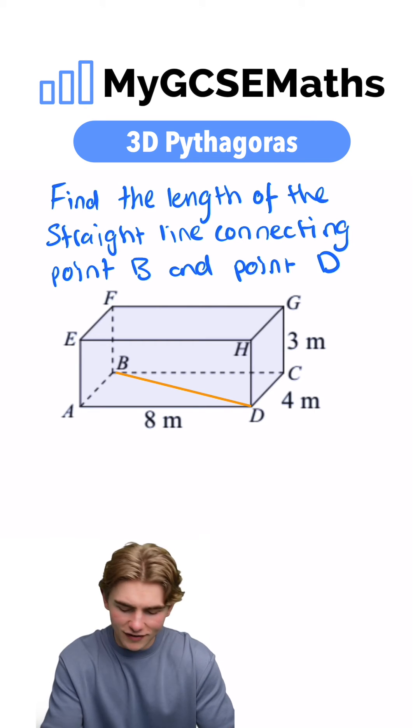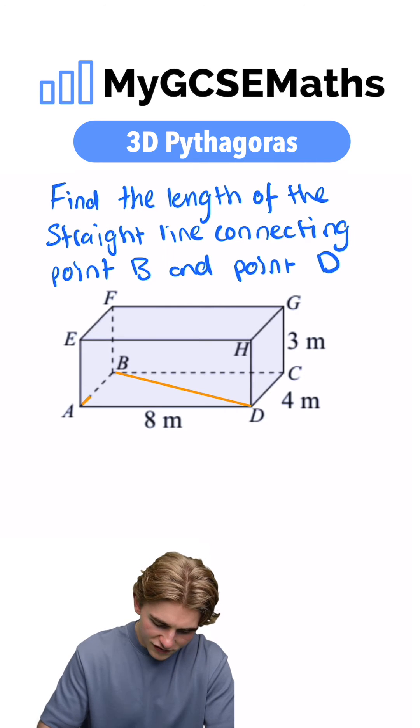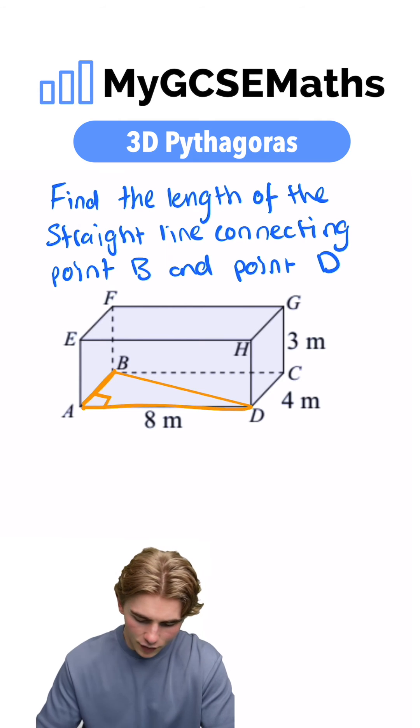You might be thinking there's no right angle triangle. We can actually draw one on, consisting of this side length here, the line connecting A and D, with this being our right angle.